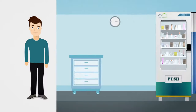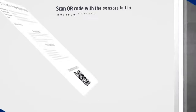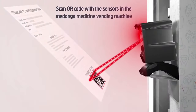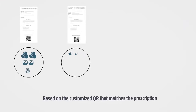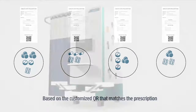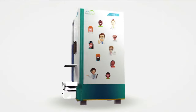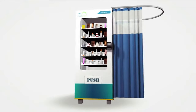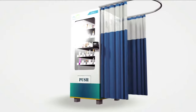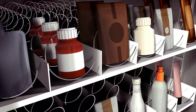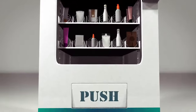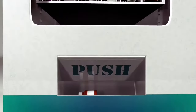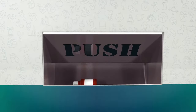At stage four, the patient scans the QR-coded prescription at the Midongo MVM — the medicine vending machine. The QR code retrieves the prescription and the medicine is immediately dispensed from the MVM, completing the medical consultation through Midongo.